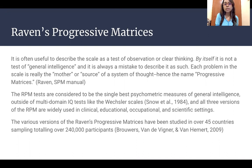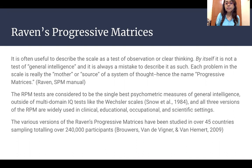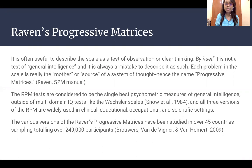Each problem in the scale is really the source of a system of thought, hence the name progressive matrices. The RPM tests are considered to be the single best psychometric measures of general intelligence outside of multi-domain IQ tests like the Wechsler scales. All three versions of the RPM are widely used in clinical, educational, occupational, and scientific settings. The various versions have been studied in over 45 countries, with sampling totaling over 240,000 participants. This is one of the best and widely used IQ tests.